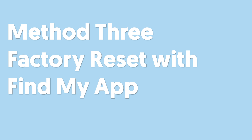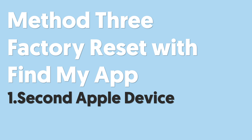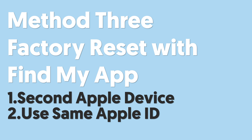Method 3: Factory reset with the Find My app. Using Find My to factory reset your iPhone will require another Apple device, and both devices need to use the same Apple ID. If you have no problem with these two conditions, then we can proceed.